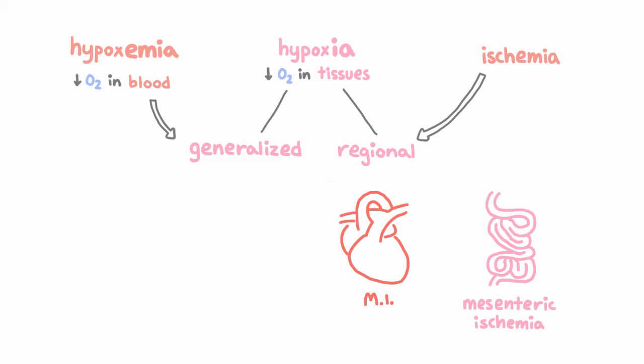A third situation, which is even more rare, is when tissues are unable to utilize oxygen despite normal levels of oxygen in the blood and tissues. An example is cyanide poisoning, which prevents cells from using oxygen by inhibiting the electron transport chain. This is considered a kind of hypoxia even though the partial pressure of oxygen in the tissues can be normal, because the end result is similar to hypoxia.